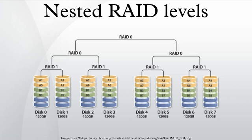RAID 100, sometimes also called RAID 10+0, is a stripe of RAID 10s. This is logically equivalent to a wider RAID 10 array, but is generally implemented using software RAID 0 over hardware RAID 10. Being striped two ways, RAID 100 is described as a plaid RAID.